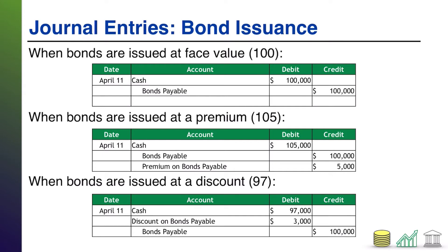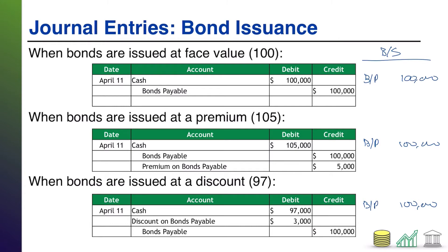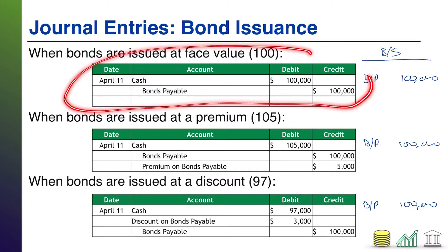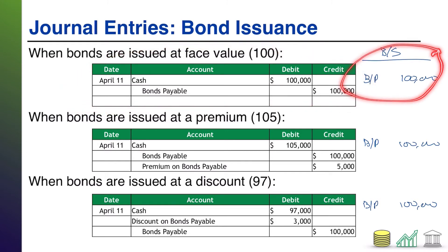Now, on your balance sheet, let's talk about that for a minute. In every situation, you're going to record a bond payable in the liability section of your balance sheet. Typically it will be a long-term liability because bonds tend to go on for many years. However, remember, once that bond is within a year of being paid out, it would move to a current liability. And in every situation — regardless of whether you issued at face value, premium, or discount — that bond payable is $100,000. That is the amount that this bond stated as its face value, and the amount this bond puts you on the hook for to pay out to investors at the maturity date. In the instance of being issued at face value, your balance sheet will simply show bond payable $100,000.